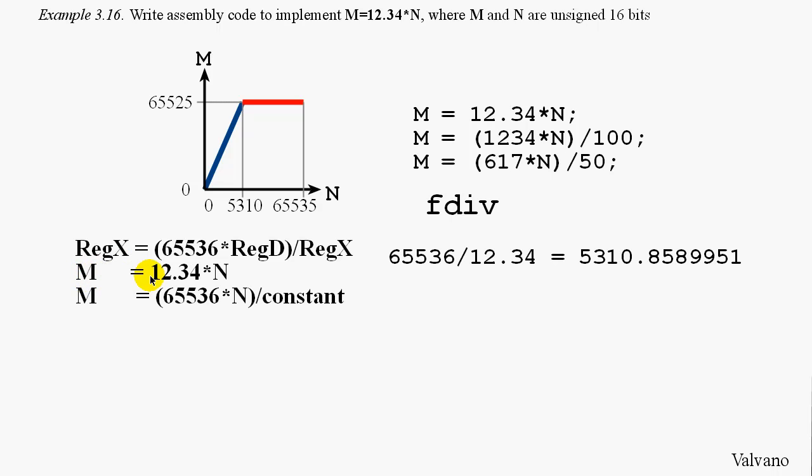Remember, we're trying to solve M equals 12.34 times N. If we could find a constant such that 12.34 equals 65536 divided by that constant, then we could implement this operation with the FDIV instruction. In general, the FDIV instruction can solve a class of problems like this one as long as this multiplying factor is greater than 1. That means that the constant will be less than 65536.